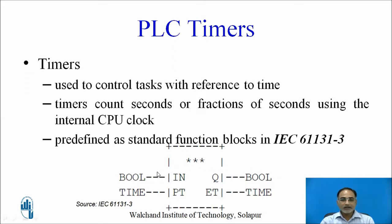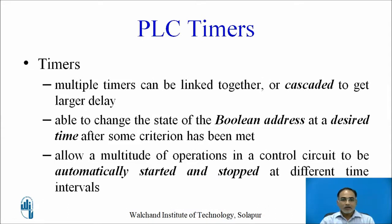A typical timer comes with two inputs and two outputs. Multiple timers can be linked together — also called cascaded together — to get larger delays. Timers are able to change the state of boolean addresses at a desired time after some criteria has been met. Timers allow a multitude of operations in a control circuit to be automatically started and stopped at different time intervals.